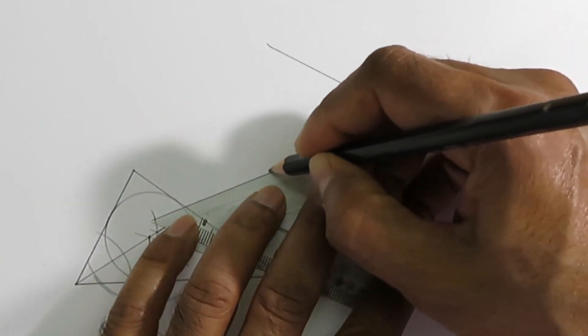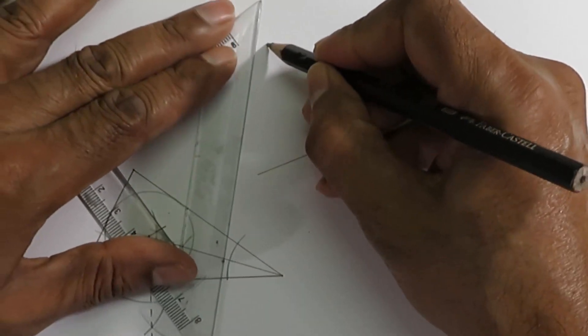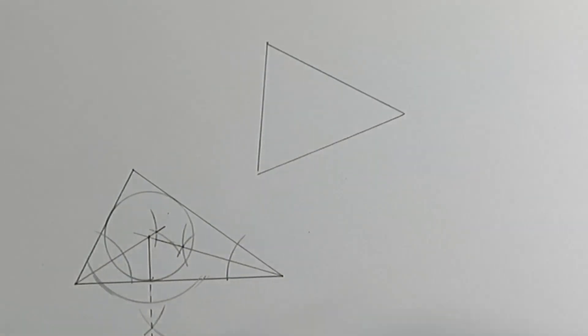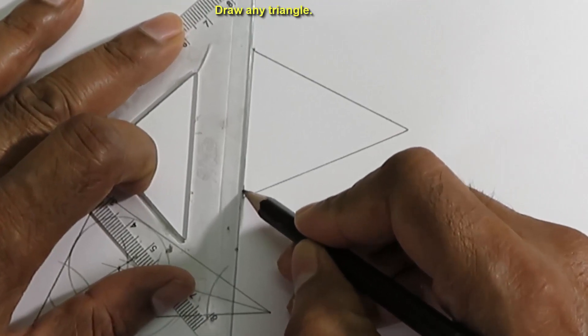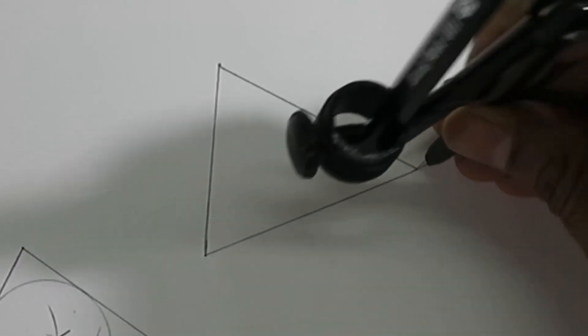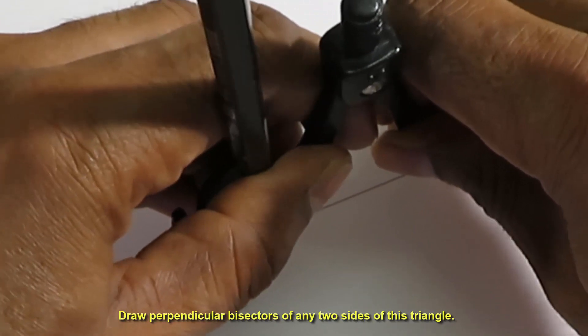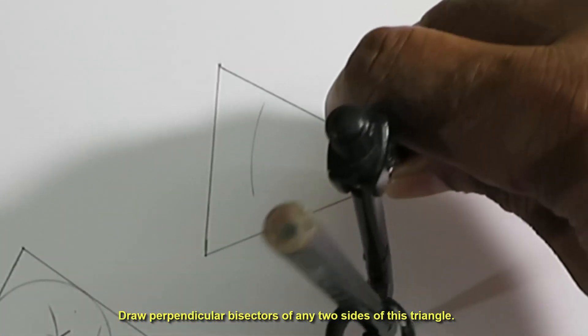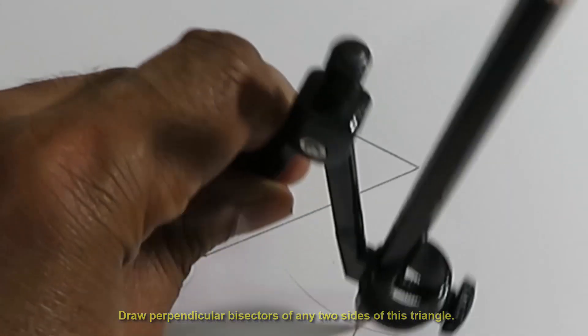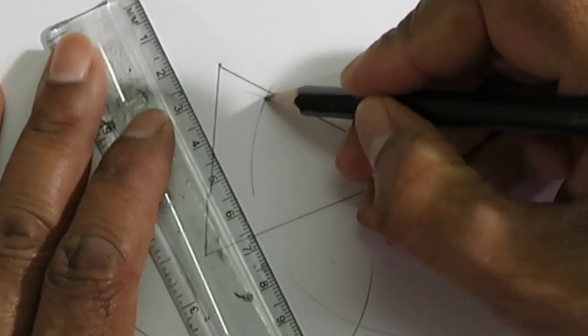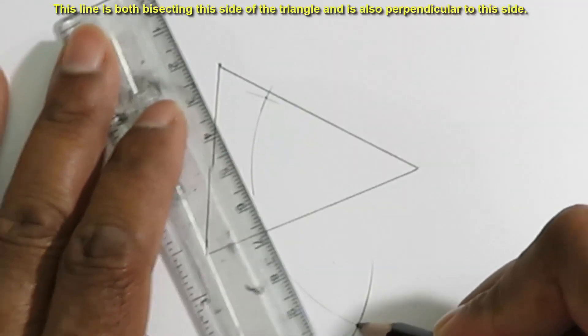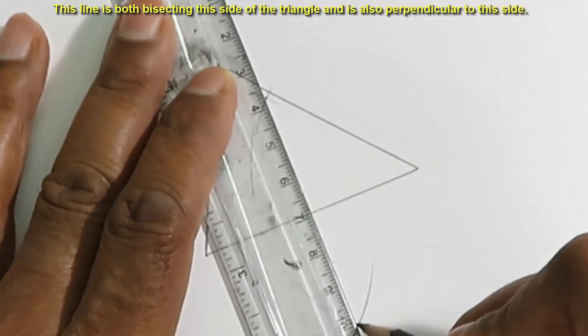Now, I will show you the method of circumscribing a circle outside a triangle, which is a circle that passes through the three corners of the triangle. Draw any triangle. This line is both bisecting this side of the triangle and is also perpendicular to this side.